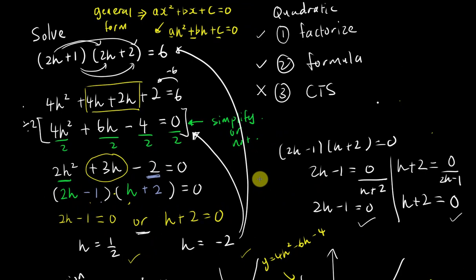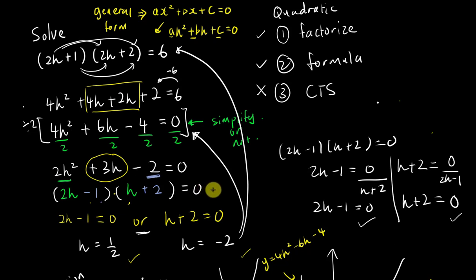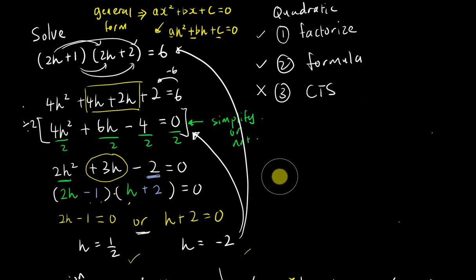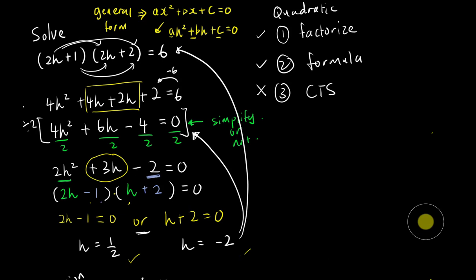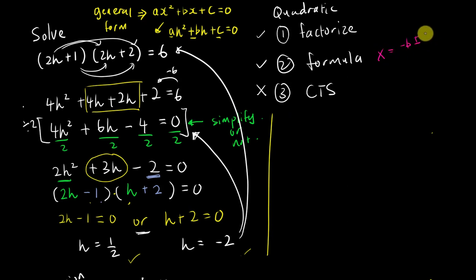So to summarize: expand the equation, simplify to make the numbers smaller if possible, then apply one of the three methods. If you don't know how to factorize, you can always use the second method — the quadratic formula. The formula is: x = (−b ± √(b² − 4ac)) / 2a. You need to identify a, b, and c from your equation.